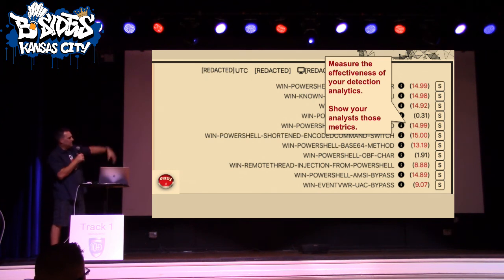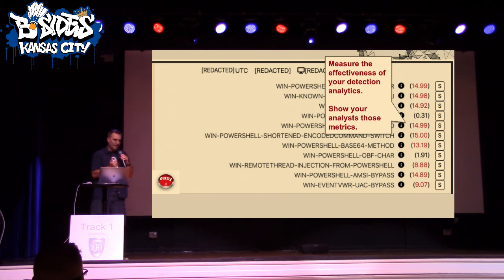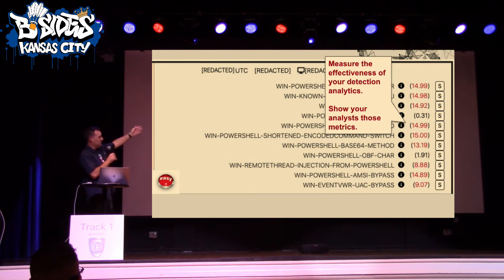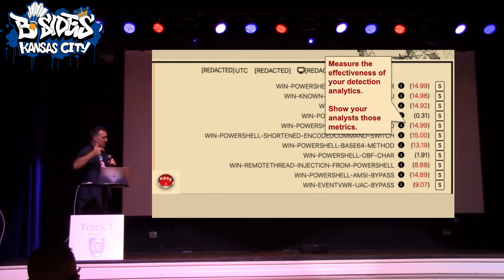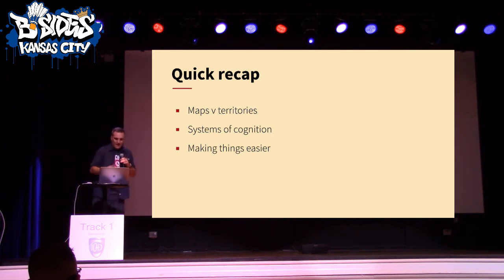We rate our detection analytics and track them over time — we know how often they convert to real detections. A score of 15 is a perfect score: every time this thing has fired, it's been something bad happening. As an analyst, I can look at this and say — 11 detection analytics fired on this one process, and most of them have pretty high scores. That just reframes how you're thinking about the investigation. You go from thinking 'this could be a false positive' to 'this is definitely something bad,' and you'll analyze it differently.